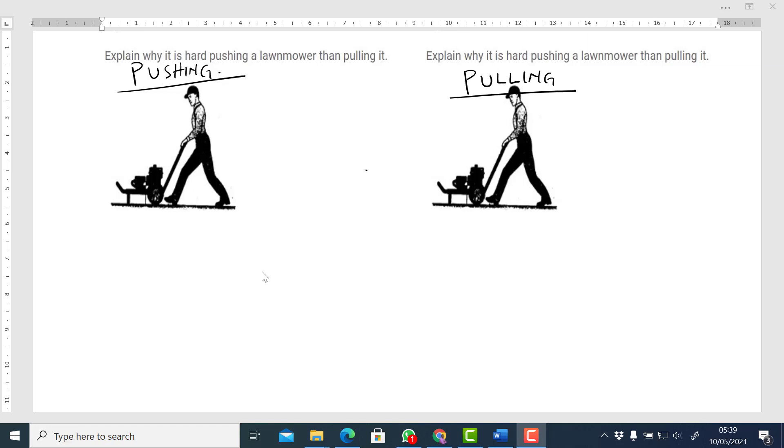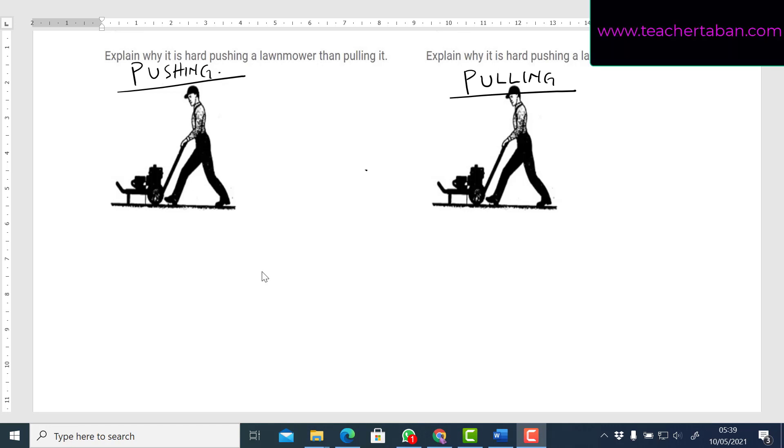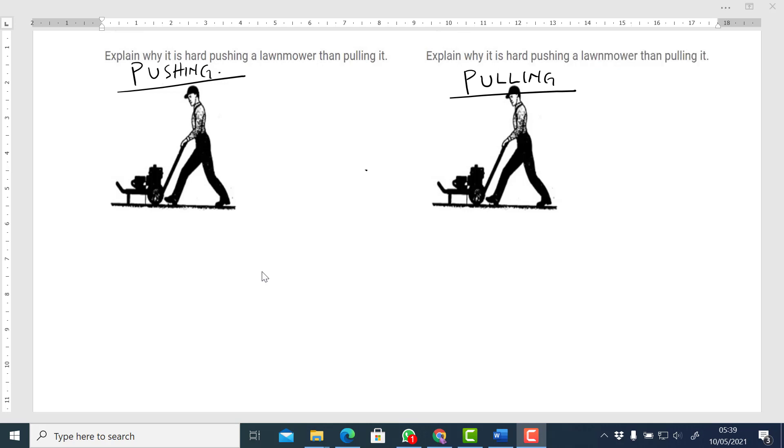So in this diagram here, we're going to be considering a person pushing the body and then pulling the body. In this case, it is the lawnmower. And what causes any of them to be greater than the other? Actually, the factor here is going to be the frictional force acting on the two bodies.